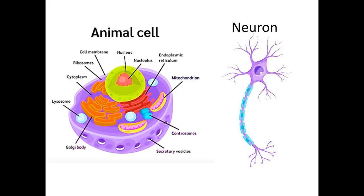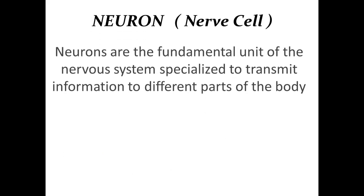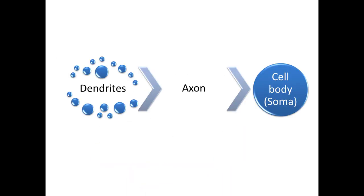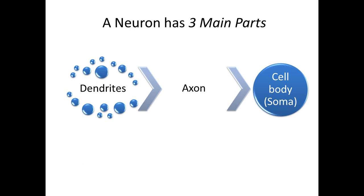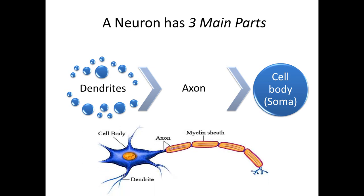The neuron is also specialized in its functions — its function is to spread information from one neuron to another via electrical conduction. We can say that a neuron is a specialized animal cell because it consists of specialized structures such as dendrites, axons, and a cell body. It may also consist of a myelin sheath, whereas both the animal cell and the neuron contain the same organelles. The neurons are the fundamental unit of the nervous system, specialized to transmit information to different parts of the body.